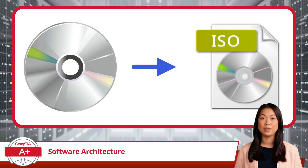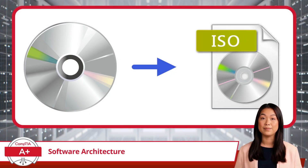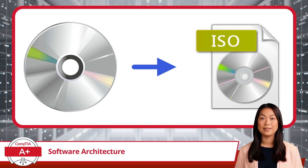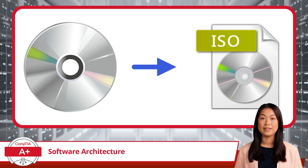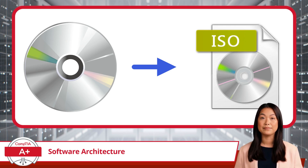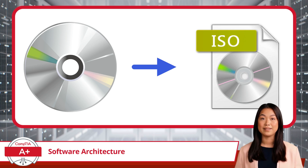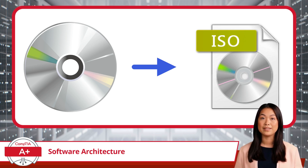Additionally, some software is provided as an ISO file, which is a disk image containing all the data of an optical disk. These ISO files can be mounted directly on your computer. For example, you might download an ISO file for a 32-bit application. By mounting the ISO and running the installer, you could install the software just as if you were using a physical disk.